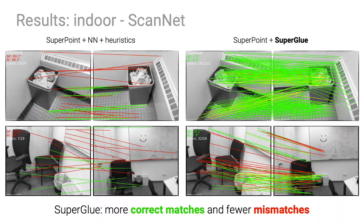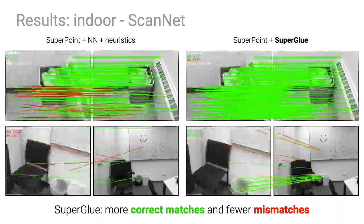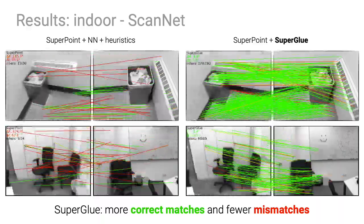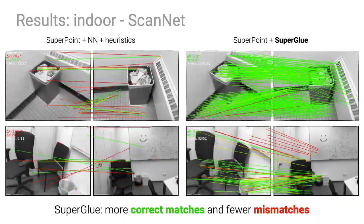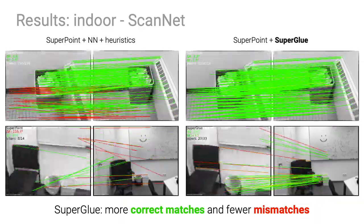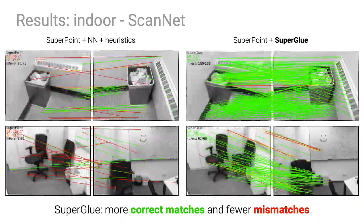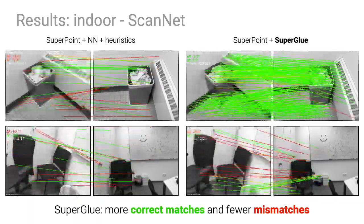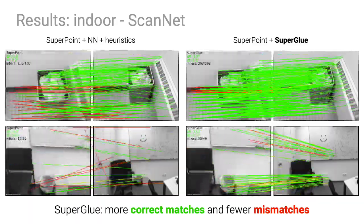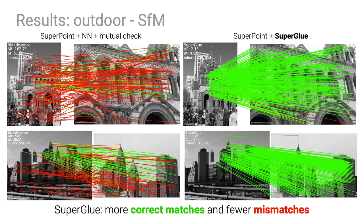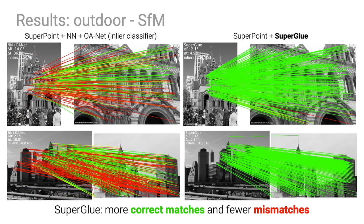We train and deploy SuperGlue in indoor scenes with SuperPoint local features. Our deep network consistently predicts more correct matches in green and fewer mismatches in red than existing classical and learned approaches. We also train SuperGlue for outdoor scenes by leveraging large-scale structure-from-motion reconstructions, and we observe the same striking superiority to classical and learned baselines.